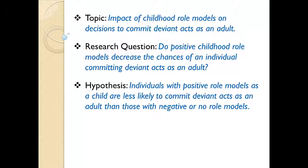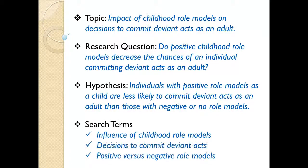When I look at these three components in our example, the following terms jump out at me: influence of childhood role models, decisions to commit deviant acts, and positive versus negative role models. These are great terms to begin our literature search with, and hopefully they will lead us to others as we start reviewing the material we locate.